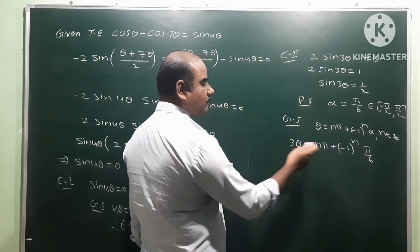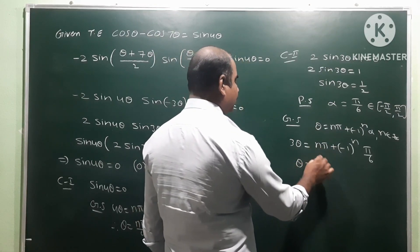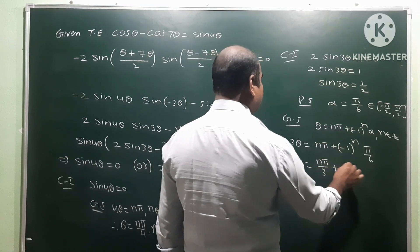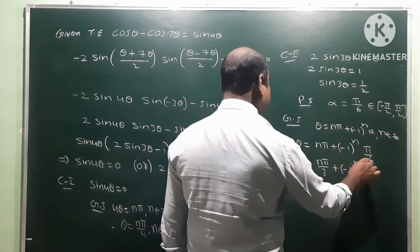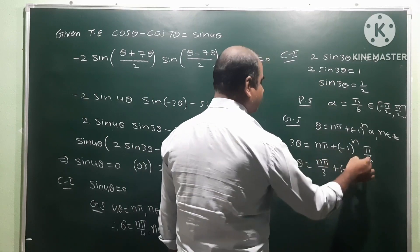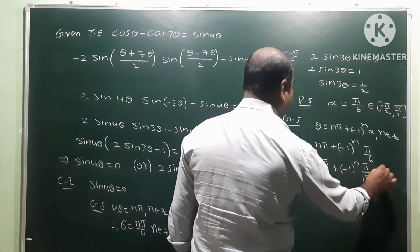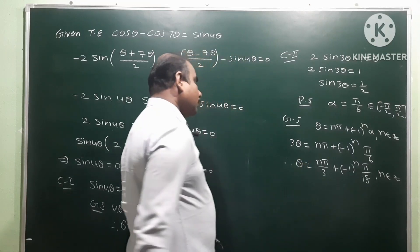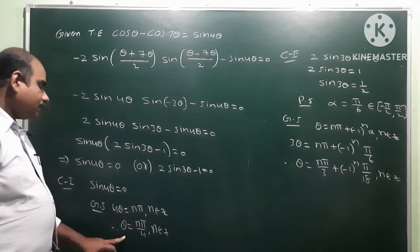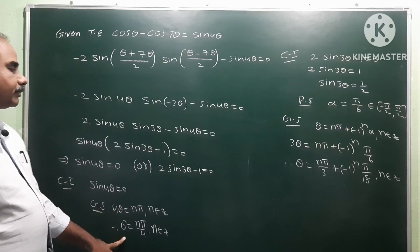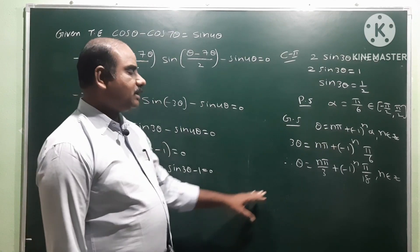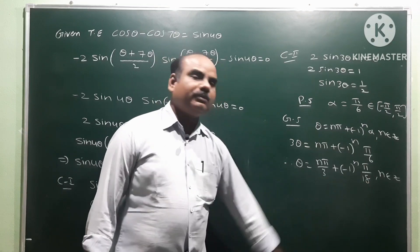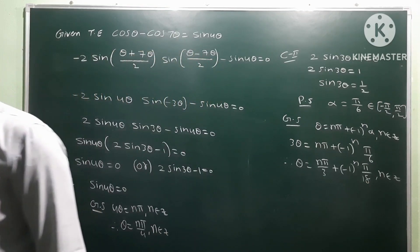Transposing 3 to the right side: θ equals nπ/3 plus (−1)^n times π/18, n ∈ ℤ. Therefore the two general solutions are: θ equals nπ/4, n ∈ ℤ, and θ equals nπ/3 plus (−1)^n times π/18, n ∈ ℤ.